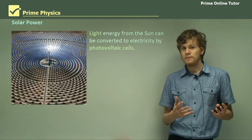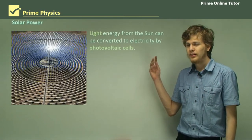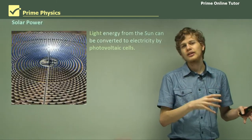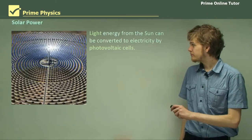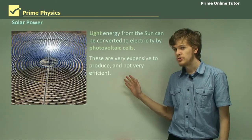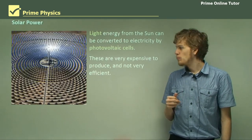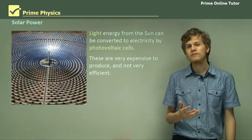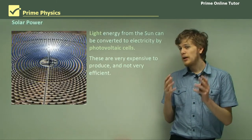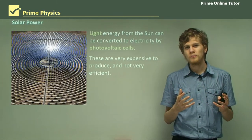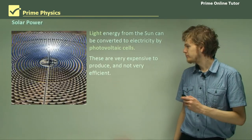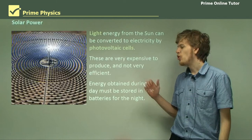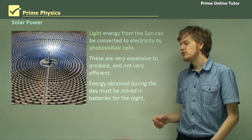Another way to get energy to produce electricity is from light. By using devices called photovoltaic cells, we can transform light energy directly into electrical energy without any intervening steps. These are quite expensive to produce and not very efficient — most photovoltaic cells convert less than 30% of the light energy they receive into electrical energy, and even the best are still under 50%. Energy obtained during the day has to be stored in a large battery, because solar panels won't operate at night.